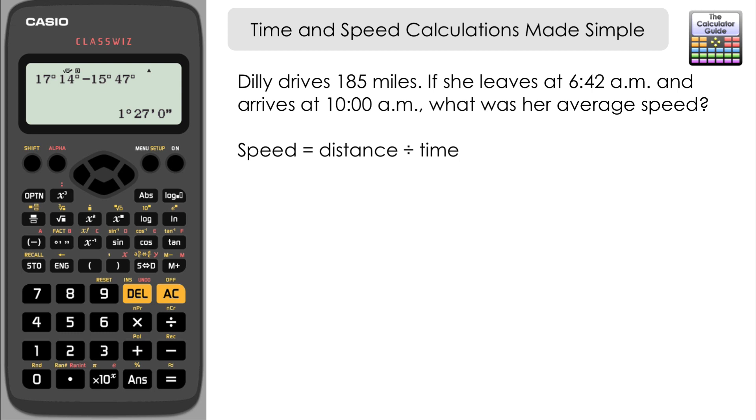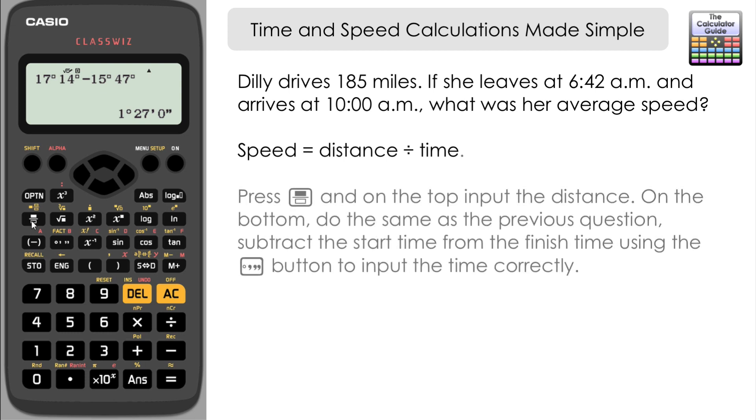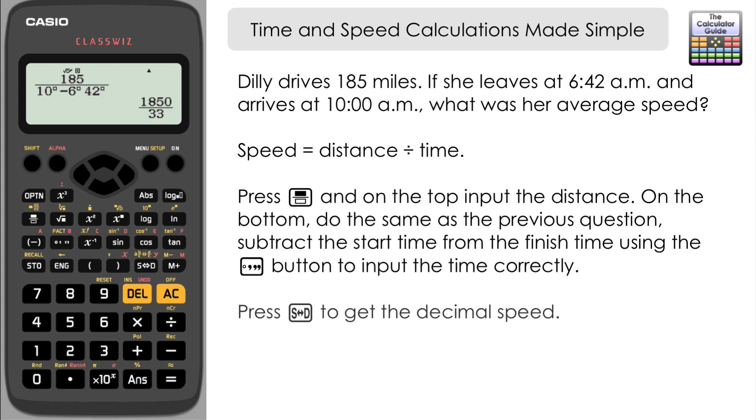What I'm going to do is set up a fraction. On the top we've got the distance of 185 miles. Now we're going to put the time, so the time will be the difference between the finish time and the start time. So the finish time was 10 hours (10 a.m.) minus the start time which was 6 hours 42 minutes. If we press equals, that's given as a fraction in the first instance. Let's press S⇔D to have a look at that as a decimal: 56.06. So it's about 56 miles per hour. The top figure, 185, was in miles and our bottom figure will be calculated in hours, so it's 56 miles per hour. Straight to the answer there.